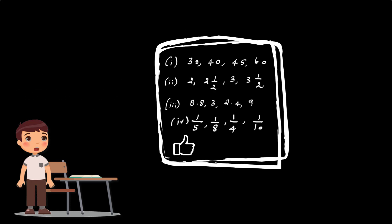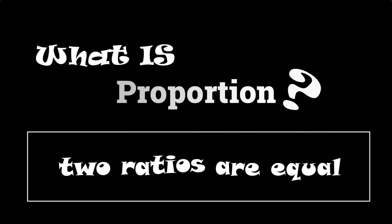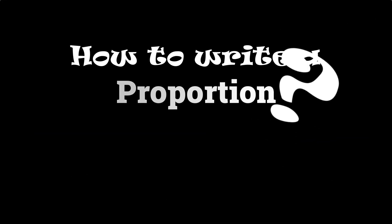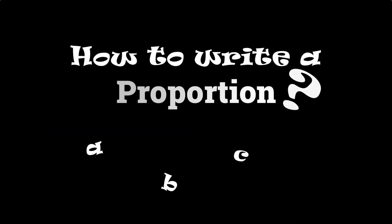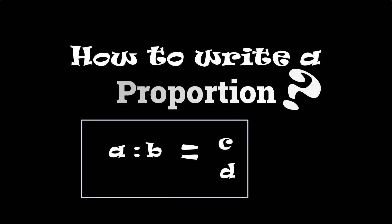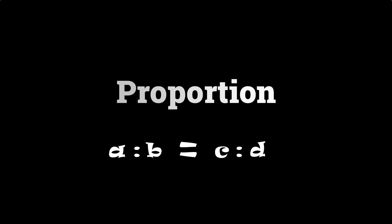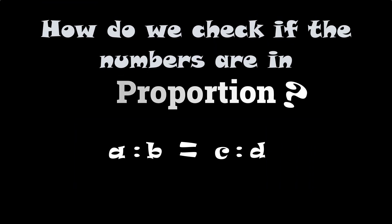What is proportion? Proportion is a statement stating that two ratios are equal. We can write proportion in two different ways. If a, b, c, d are four different numbers, we can write it as a/b = c/d, or using colon notation as a:b = c:d.